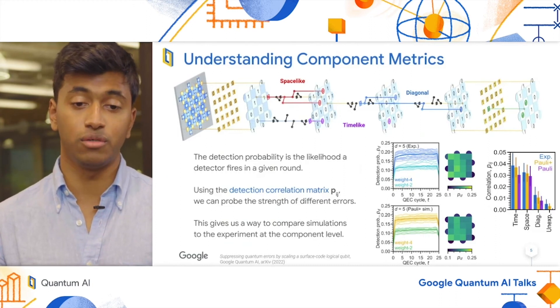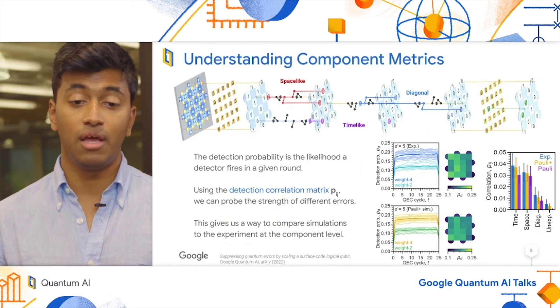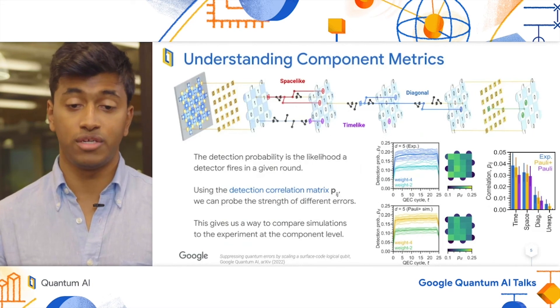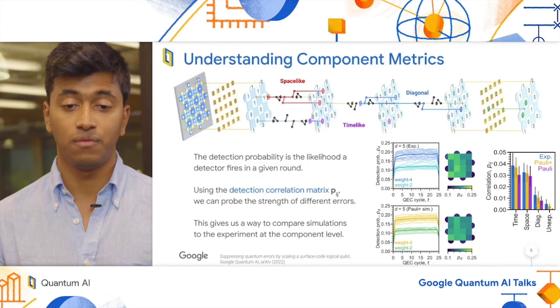Lastly, we have diagonal errors, shown in blue. In the example, an X error has occurred after the second CZ in a circuit. This leads to the third CZ showing a detection in one round, and the second CZ showing a detection in the round afterwards. This is a diagonal edge.